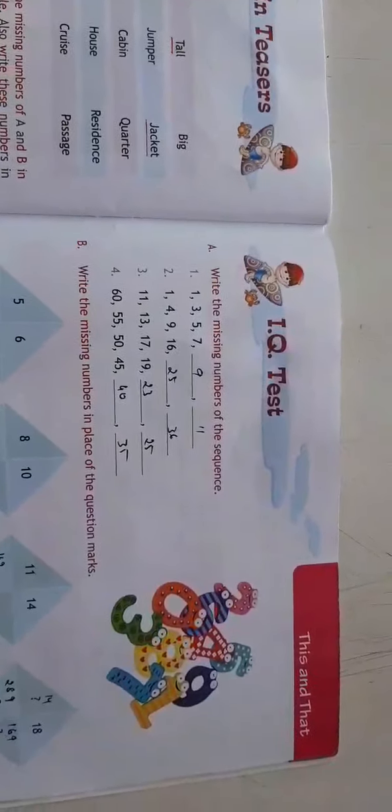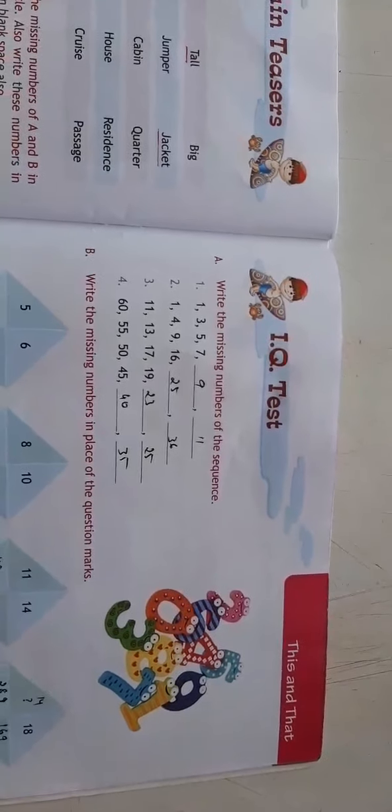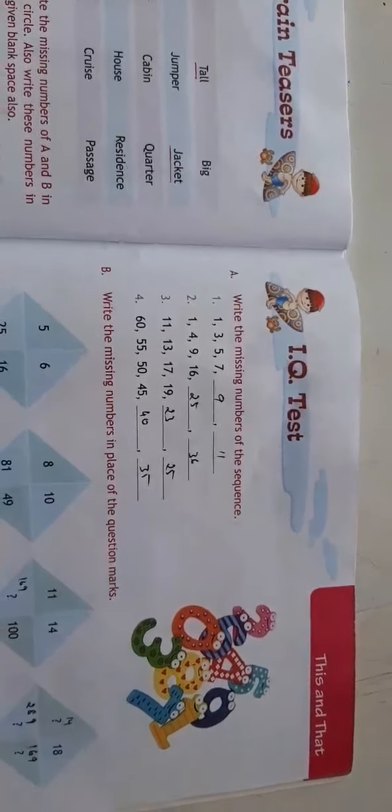Now coming to IQ test. These are increasing or some of them may be in decreasing order. If we talk about first one, 1, 3, 5, 7, 9, 11. All odd numbers.